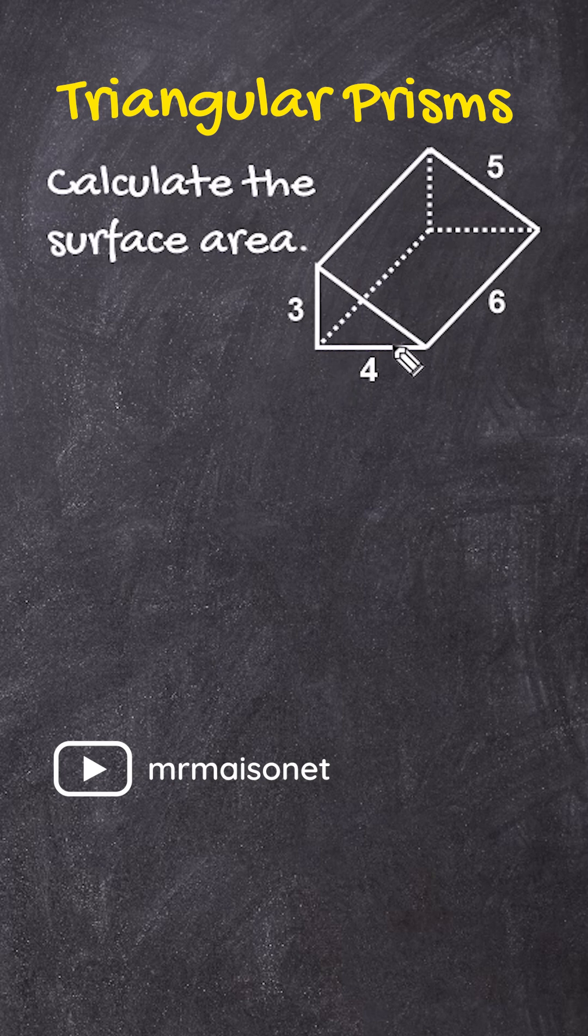So if we take the base and the height of one of the triangles, in this case, 3 times 4, that is going to give us the area of both triangles added together.